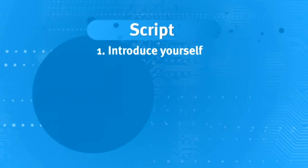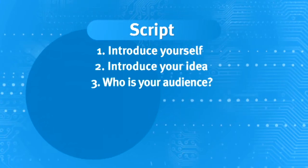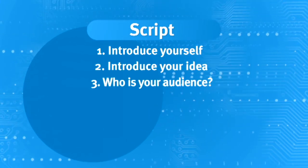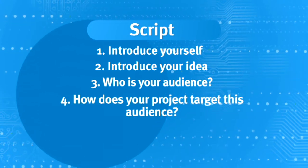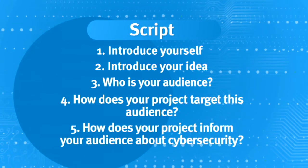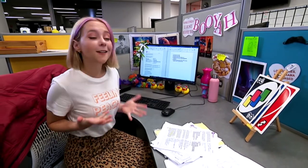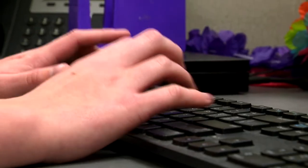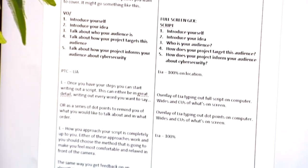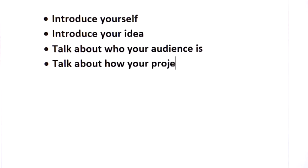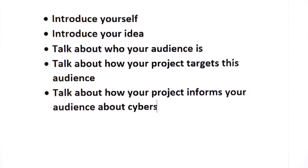When you start out, think of it as a bit of an algorithm. Write a list of all the things you want to cover: introduce yourself, introduce your idea, talk about who your audience is, talk about how your project targets this audience, and talk about how your project informs your audience about cyber security. Once you have your steps, you can start writing your script — either in great detail, writing out every single word, or in dot points to remind you of what you want to say and in what order.